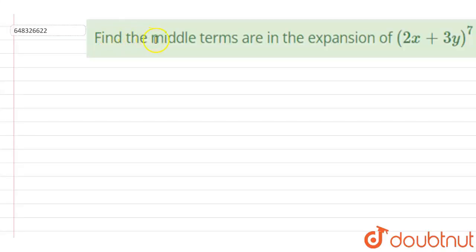Hello, the question is find the middle terms in the expansion of (2x + 3y)^7.